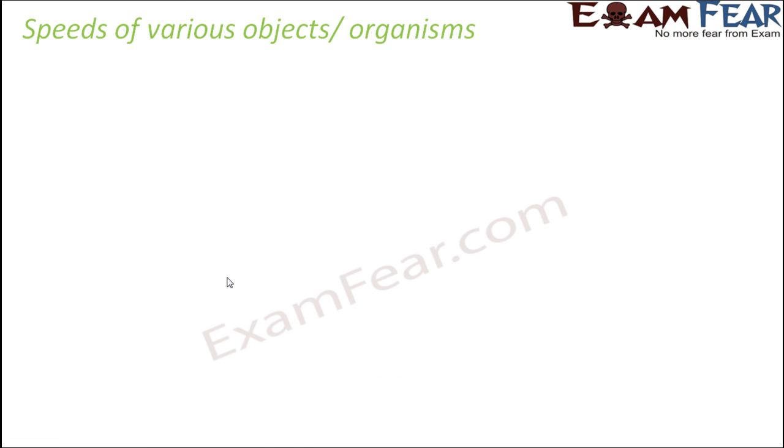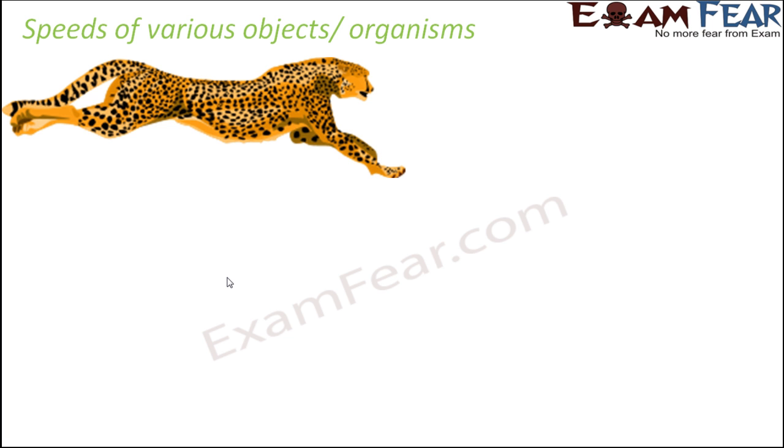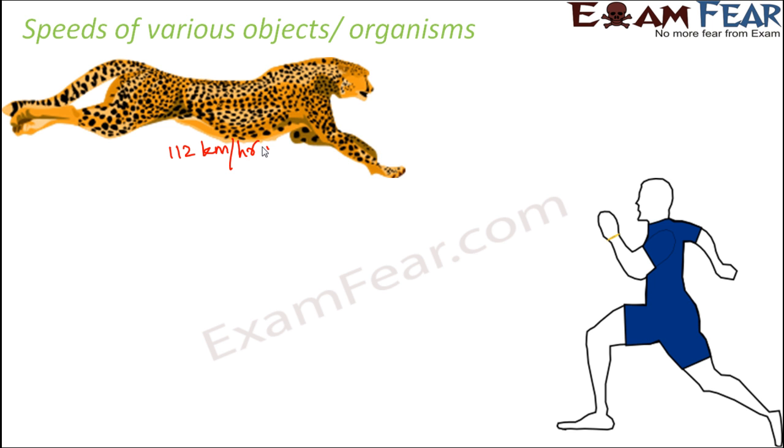Now when we talk about speed, it is not only the vehicles which we can think of. You talk of animals, for example cheetah, which is very much known for its speed. It is one of the fastest land animals and it has a speed of around 112 kilometers per hour. That's a huge speed. You talk about human beings - normally, human beings have an average speed of 40 kilometers per hour.